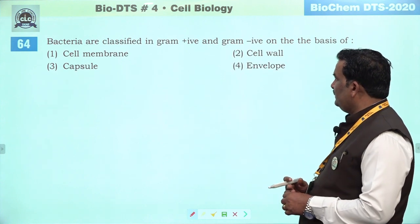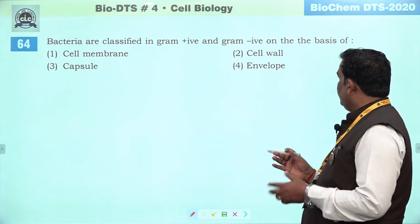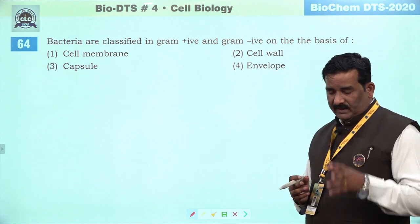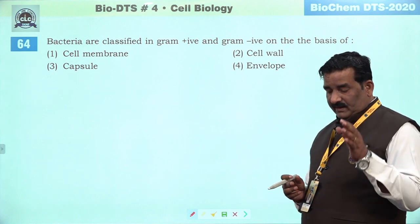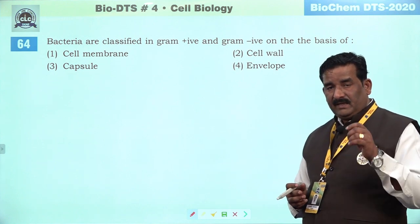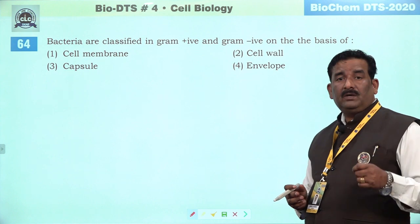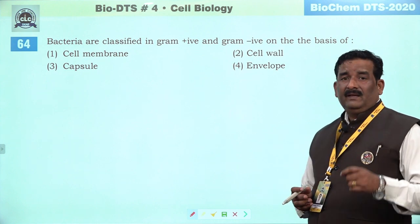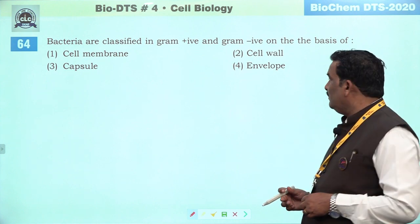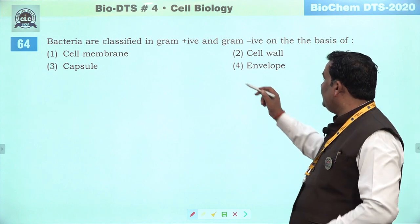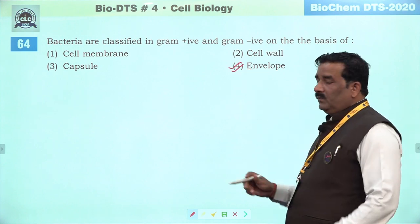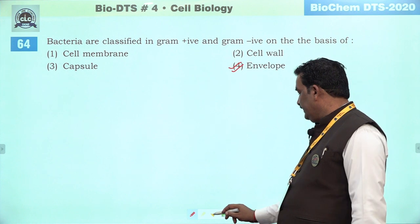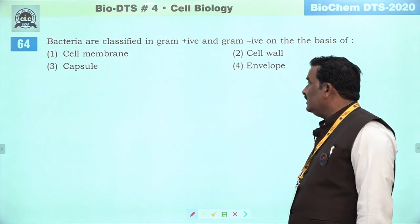Next question: bacteria are classified as gram positive or gram negative on the basis of. Gram positive and gram negative bacteria — membrane, cell wall, aur glycocalyx — teeno par based hai, but actually teeno ko hi hum collectively envelope kehte hain. Isliye fourth ek better option hai — right answer hai.